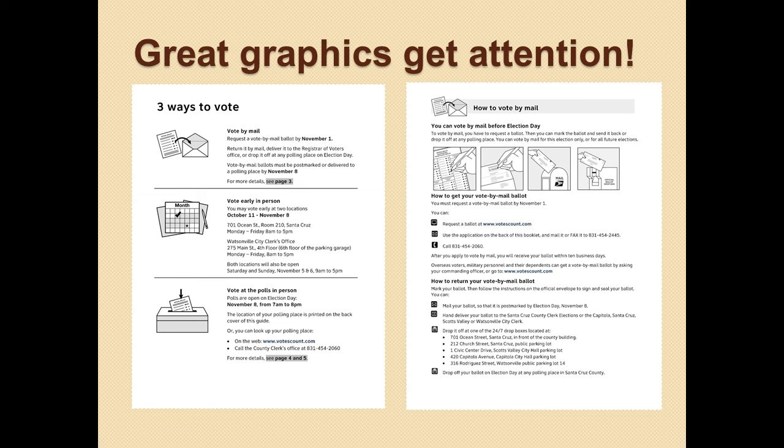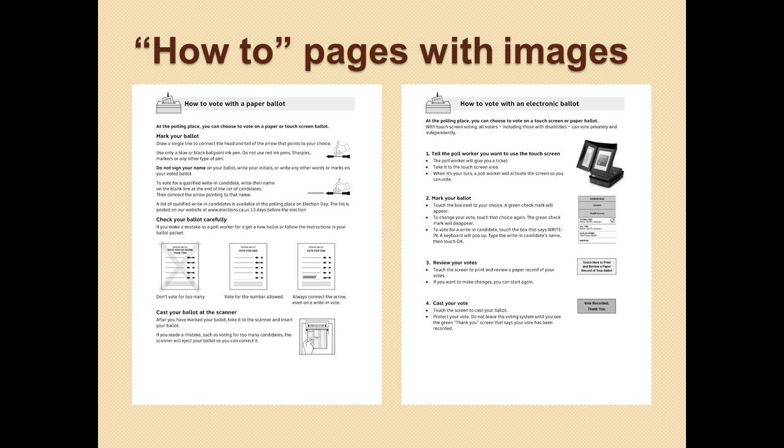These how-to pages really come alive with the images we have now. We have the standard graphic showing how to connect the head and tail of the arrow, which voters do get confused about. We show what not to do regarding overvoting, how to vote correctly, and an example of how to do a write-in. On the right-hand side we have how to vote the electronic ballot, again using images that really help the voter understand what to do easily and simply.